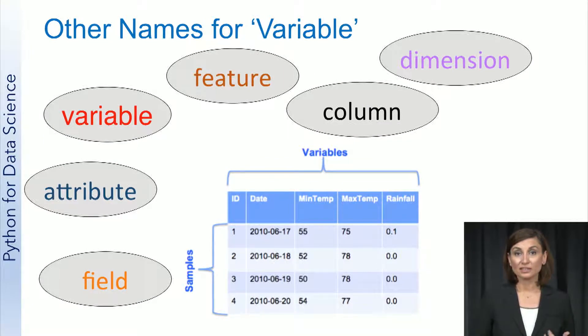Similarly, there are many names for variables in addition to feature. Some other terms for variable are feature, column, dimension, attribute, and field. All of these terms refer to the same specific characteristics for each sample in your data set.